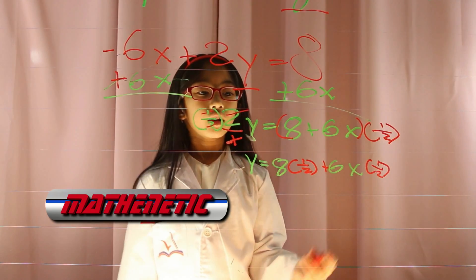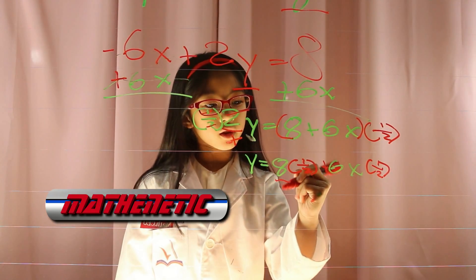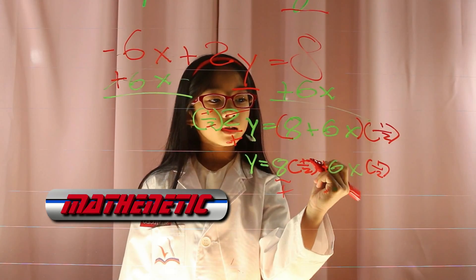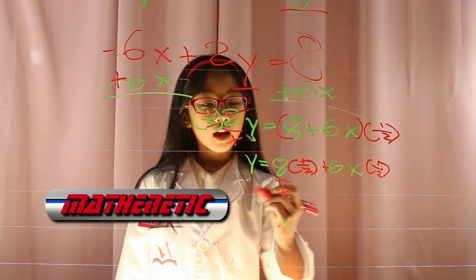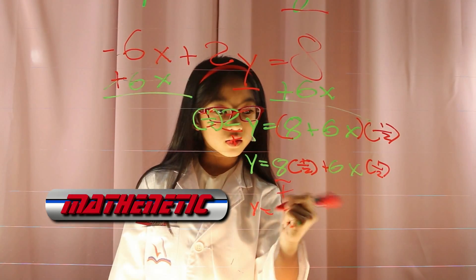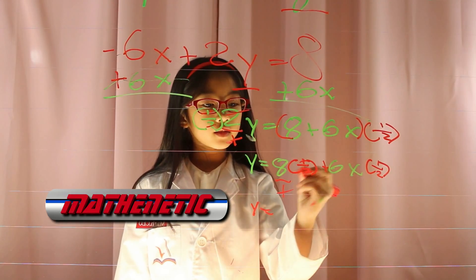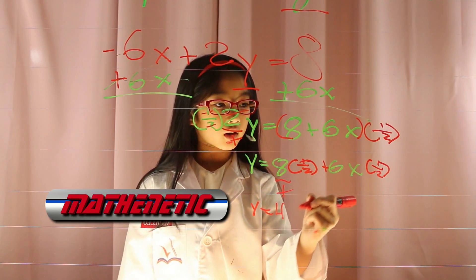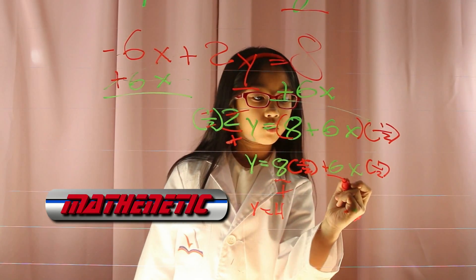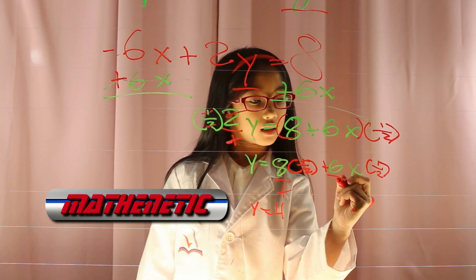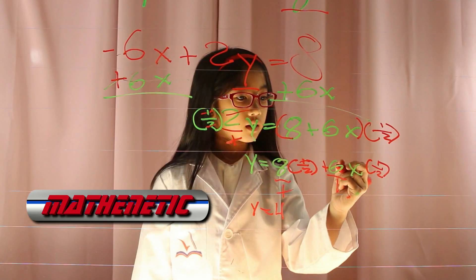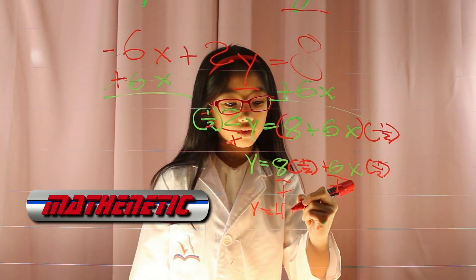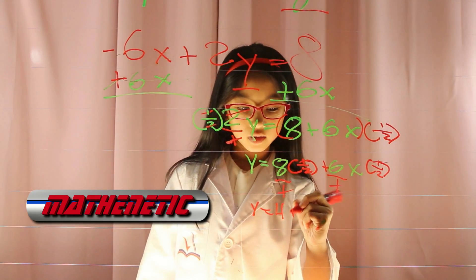You need to pretend there's a 1 under the 8. The 1 and the 1 cancel. y equals 8 divided by 2, which is 4. Then pretend there's a 1 under 6. 6x divided by 2 is 3x.